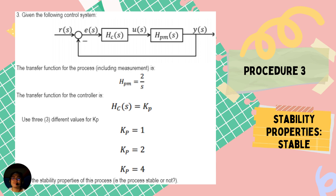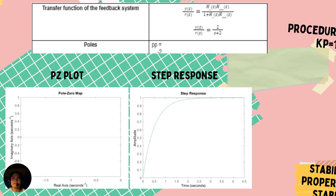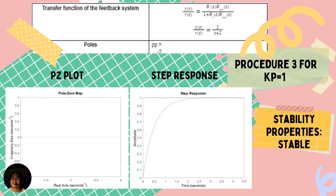For example procedure 3, we are given the following transfer functions: H_P(s) = 2/s, H_C(s) = Kp, and three different values for Kp: 1, 2, and 4. The stability property for each was determined for every Kp given. Using the system formula for a negative feedback loop, we have H_C(s)·H_P(s) all over 1 plus H_C(s)·H_P(s).